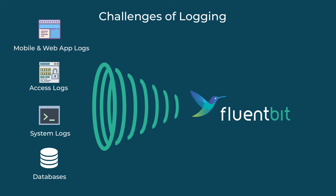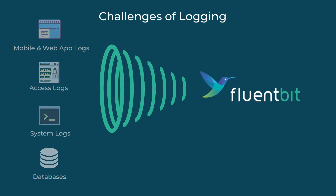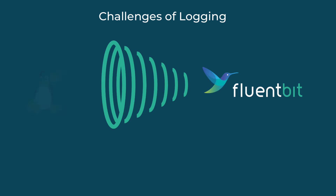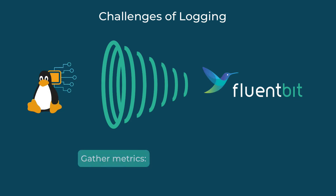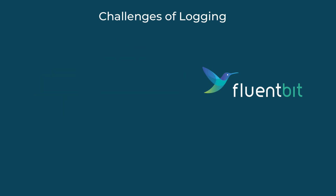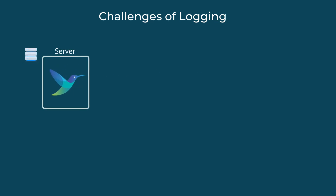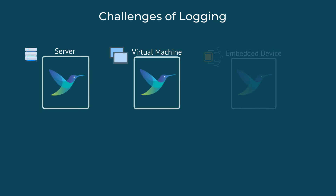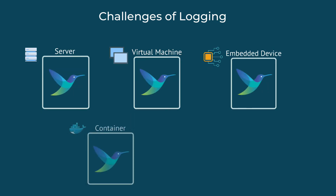In addition to collecting logs, FluentBit also has metrics collection capabilities for embedded Linux systems. For example, it can gather metrics on CPU, memory, storage, etc. And because it's general purpose, FluentBit can be deployed on any environment, like bare metal servers, virtual machines, embedded devices, and containers.